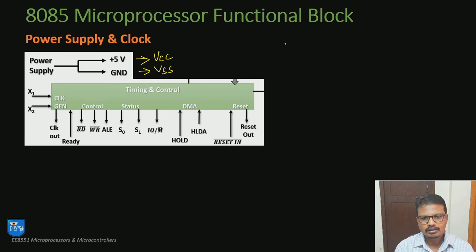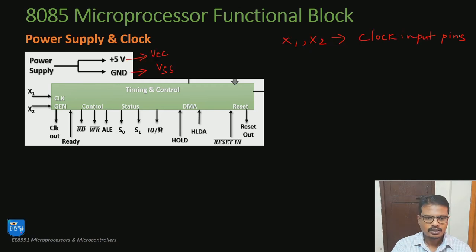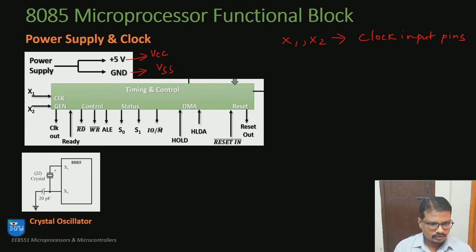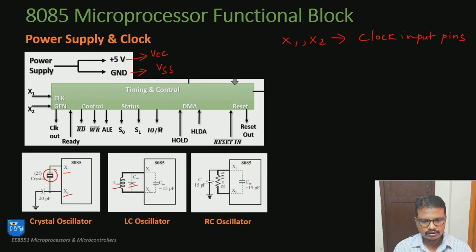Moving on to the clock block, the clock block of the 8085 microprocessor has 3 pins. The first 2 pins are X1 and X2, which are meant for triggering the inbuilt clock signal generator present inside the microprocessor. To excite the internal clock circuit, we need to give clock signals via pins X1 and X2. This can be done with a crystal oscillator connected to pins X1 and X2. The second option is an LC oscillator — a parallel LC circuit driving the internal clock circuit. The third option is an RC circuit connected externally to pins X1 and X2, which will serve as an oscillator to excite the internal clock circuit.